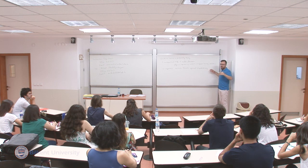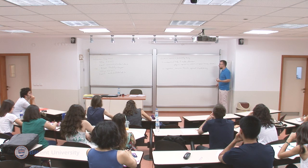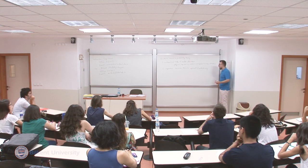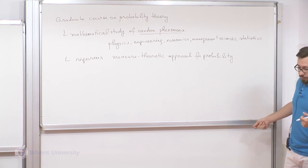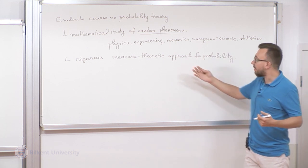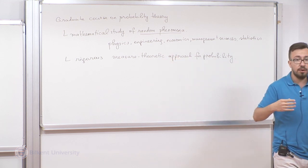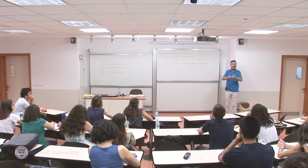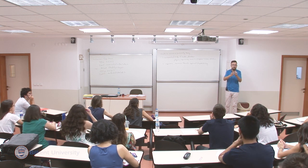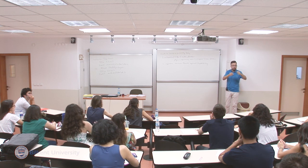We need more mathematics to make things rigorous and sound, so that we can deal with discrete things as well as continuous things. That's why we need a rigorous approach based on measure theory. One of the bridges between measure theory and probability theory is that computing probabilities is quite similar to calculating lengths, areas, or volumes.